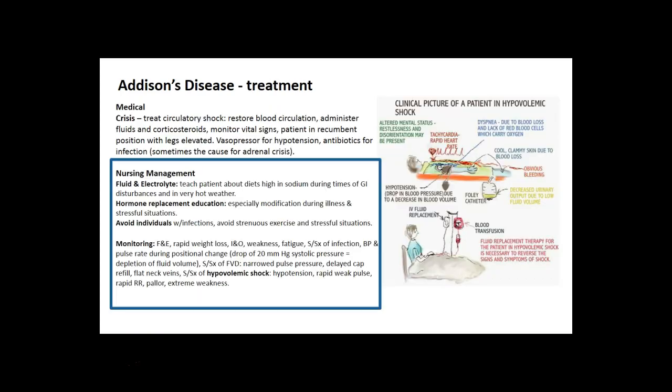In crisis, treat the patient for hypovolemia before they go into complete shock. Management includes fluid and electrolyte replacement, hormone replacement, and avoiding individuals with infection and any kind of strenuous exercise or stressful situations. With a steroid insufficiency, patients have to self-regulate, which is very difficult — figuring out how much steroid replacement is needed for stressful situations or illness.